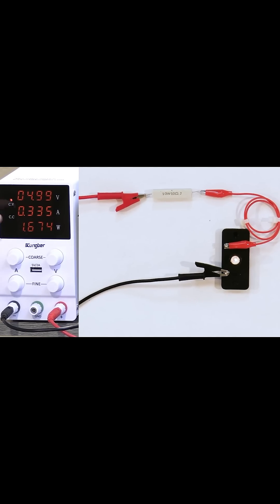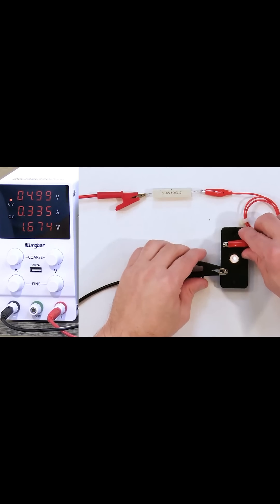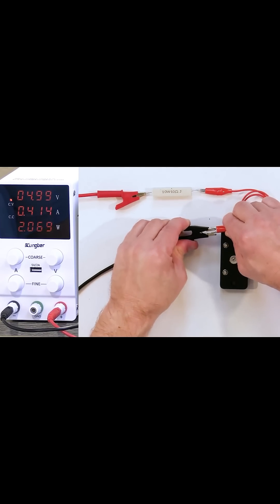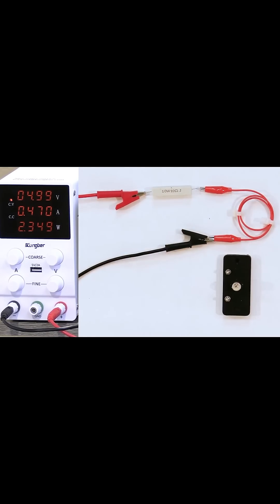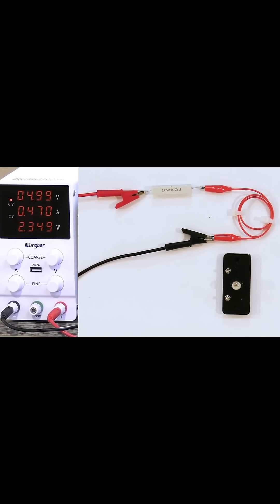Notice the current flowing through this circuit is 0.335 amps, right? But if I take the light bulb out, so it's no longer there, and I just have it go through the resistor by itself, this is what we had before. The current is a little bit higher, 0.470.